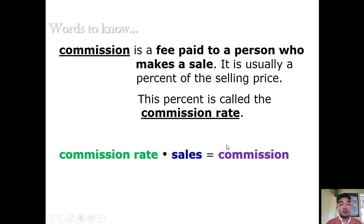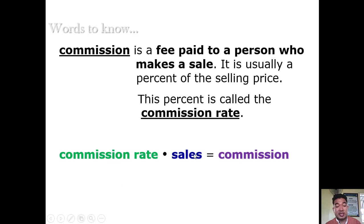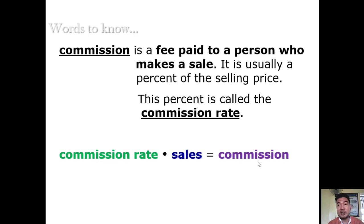These are the words that you must know in order to understand what is being discussed in this lesson. Commission is a fee paid to a person who makes a sale. It is usually a percent of the selling price. This percent is called the commission rate. Take note that commission rate times sales is equal to the commission.